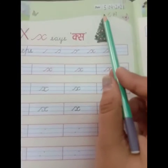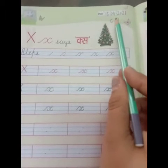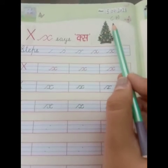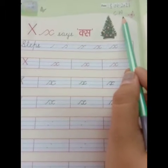So firstly you will write date, 15th of April 2021, and then you will write CW for class work.